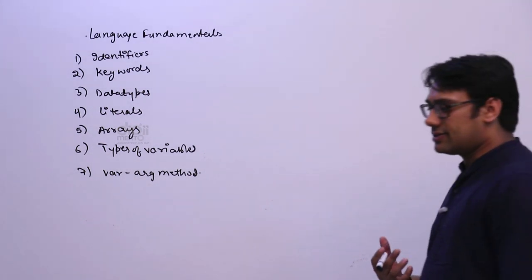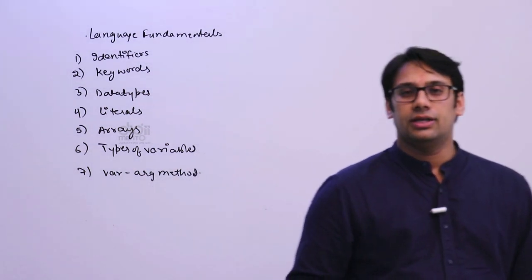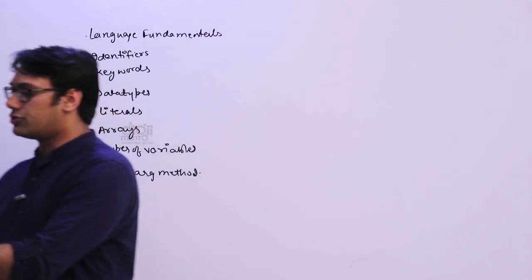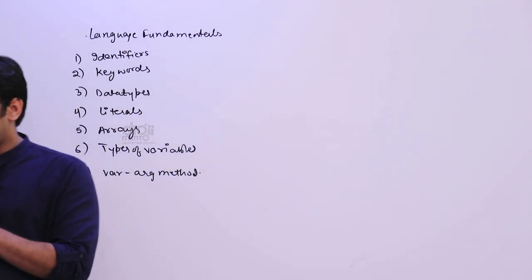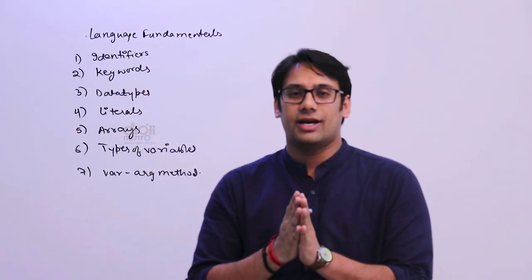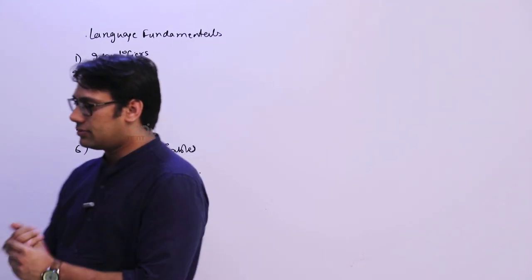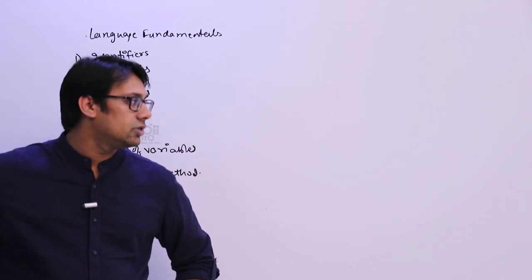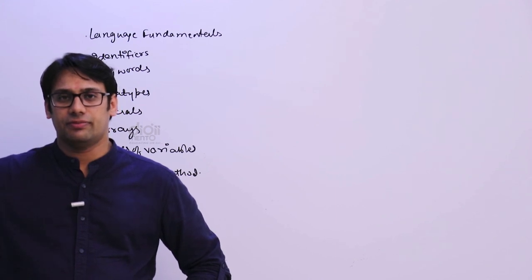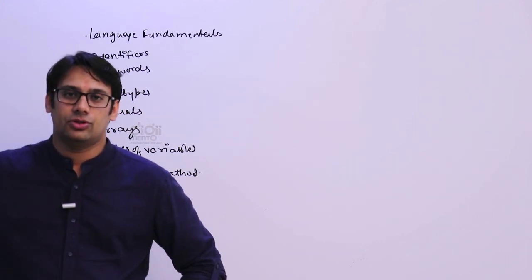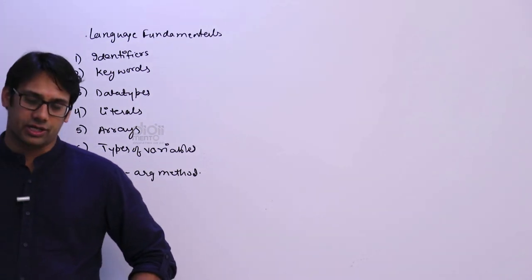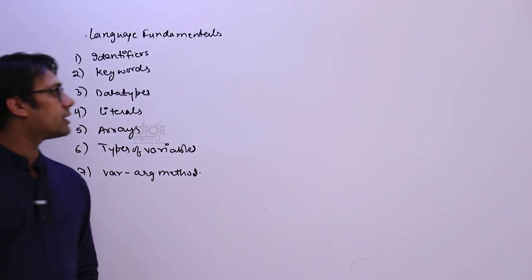The very first topic is identifiers. An identifier is generally considered as a name in the program - for example it can be the name of a class or the name of a method. A name in a program is called an identifier. It may be the class name, method name, variable name, or a label name.